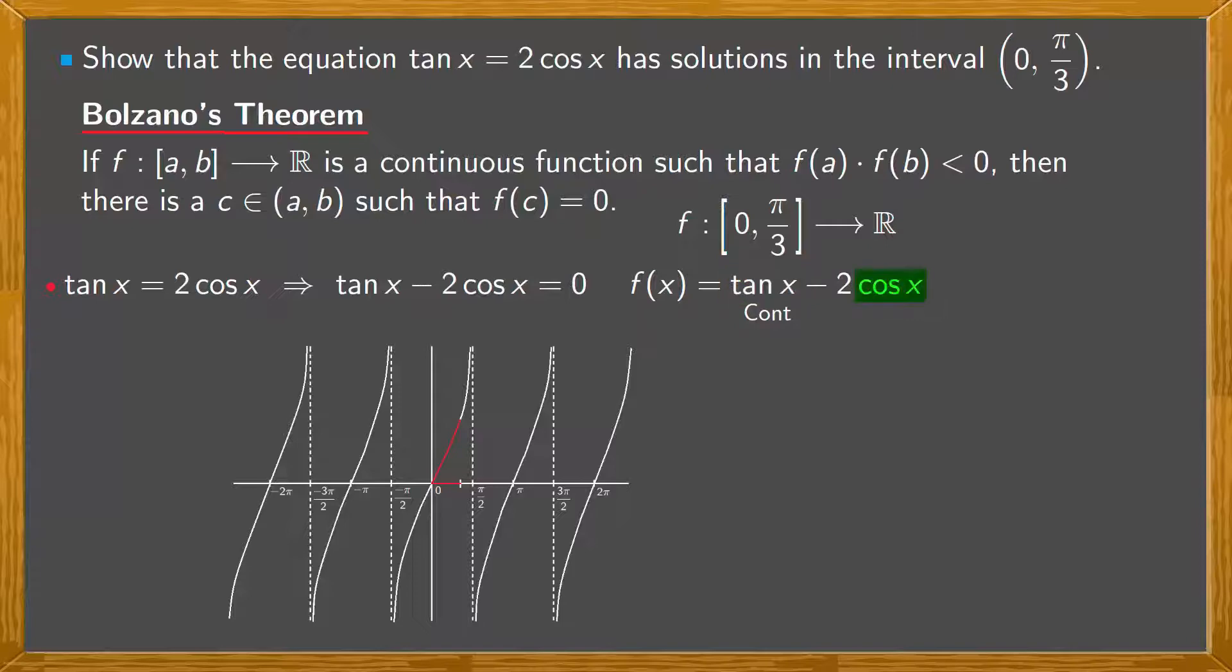Now, since cos x is continuous for all R, it's continuous in [0, π/3]. And so also is 2 cos x. The subtraction of continuous functions is a continuous function. Therefore, we have that f is continuous on the interval [0, π/3].